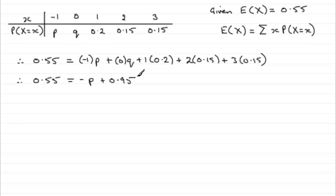And so, therefore, we need to just rearrange this. If we were to add p to both sides and subtract 0.55 from both sides, we'd end up with p equaling 0.95 minus 0.55, which is 0.4. So, that gets us our p-value, but not the value of q.